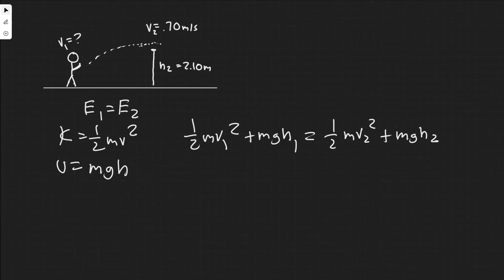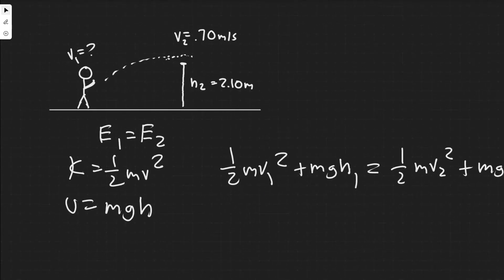So, if we look at this in the beginning, we know the velocity at the end is 0.7 meters per second. So, we know V2. If we look at H2, H2 is the height at which they're trying to jump, 2.1 meters. V1 is what we're trying to solve for. We're trying to find the minimum speed for this to actually happen. H1 is the height in the beginning.